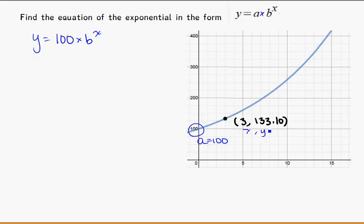Going to the point that I've been given here, x, y, I know I can replace y with 133.10 equals 100 times b to the power of 3. Put this in the solver, and you should get that b equals 1.10.